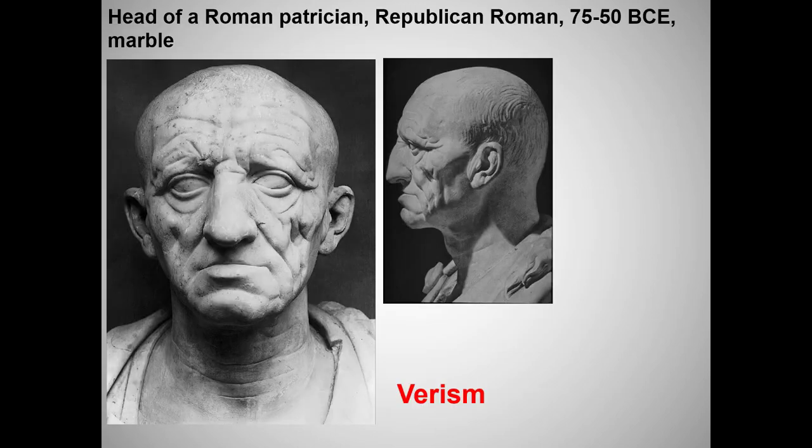Roman Republican portraits were all about dignitas. Roman patrician society was obsessed with lineage. Noble families kept wax images of their ancestors in cupboards in their homes. The statue on the right shows a patrician holding busts of his ancestors.